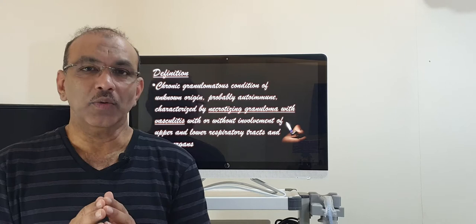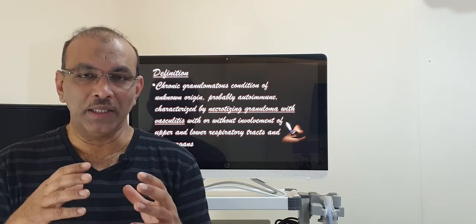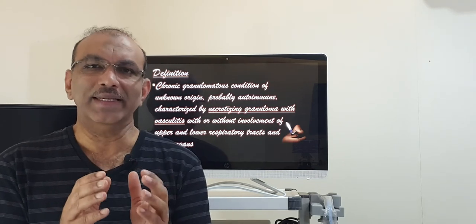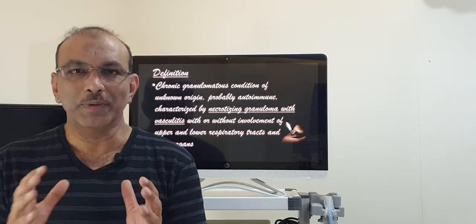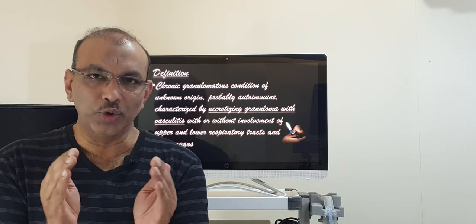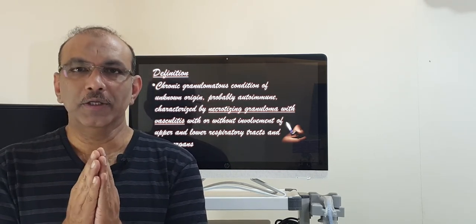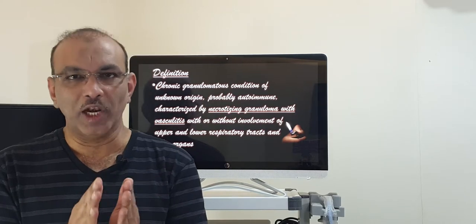Granulomatosis means what happens in the cells in the circulatory system. These specific cells gather in the specific organs. They group together to form granuloma. So it's termed as chronic granulomatosis condition.